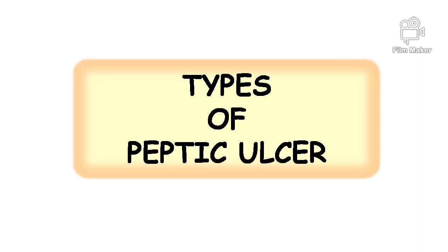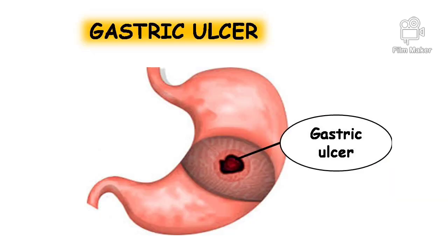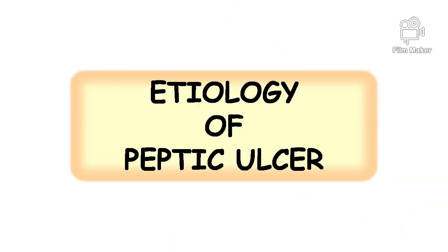The two major forms of peptic ulcer are duodenal ulcer and gastric ulcer. Coming to the etiology of peptic ulcer — etiology means the cause of the disease.